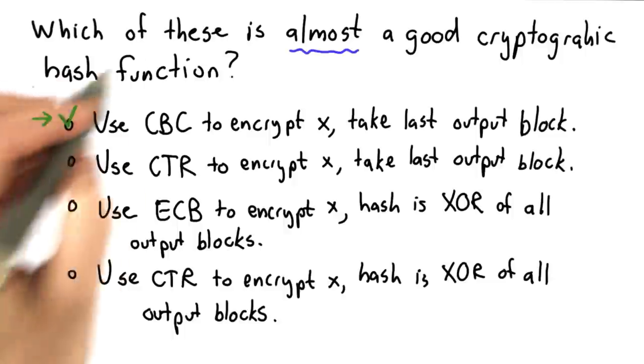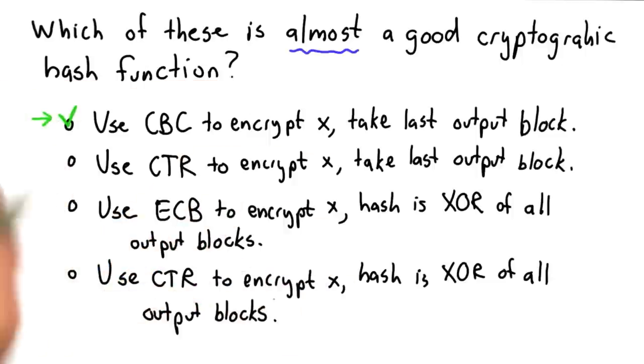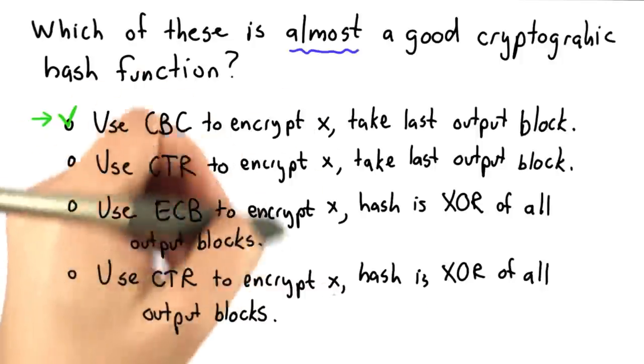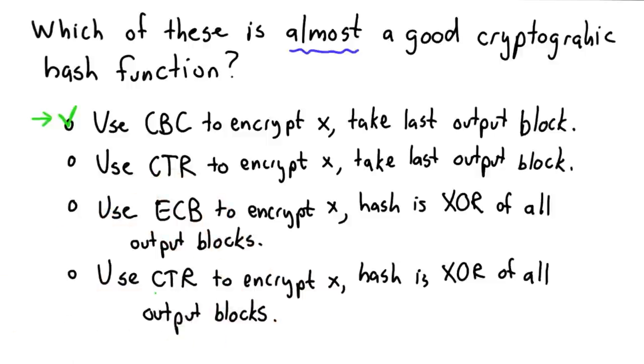So the answer is the first one. The property that we need is to provide this collision resistance property. All of these provide the compression needed. We're taking a large input x that could be any size, turning it into the size of one block. The other three don't provide the collision resistance we need.